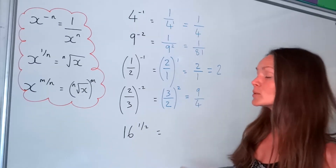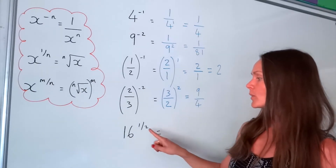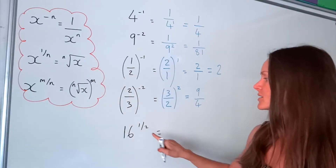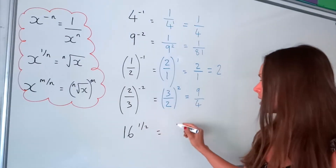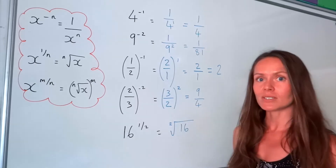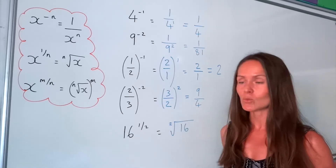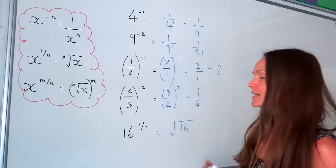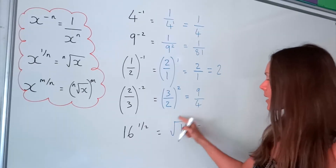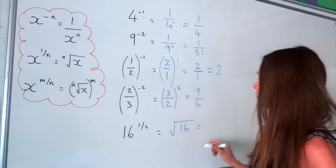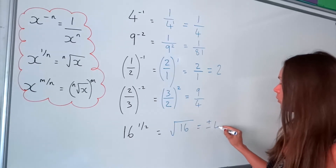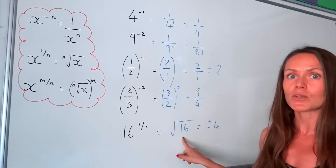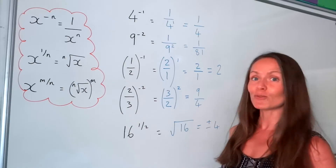Now onto a different rule. When you see a fractional power, it means you're going to be rooting. Because this number is a two in the denominator, we're going to be square rooting 16. Normally when we square root we don't write the two — it doesn't matter either way. The square root of 16 gives two solutions: positive or negative four, because both four squared and minus four times minus four equal 16.